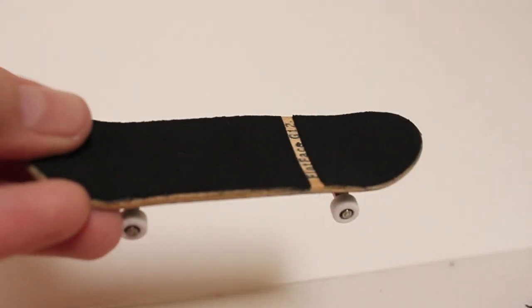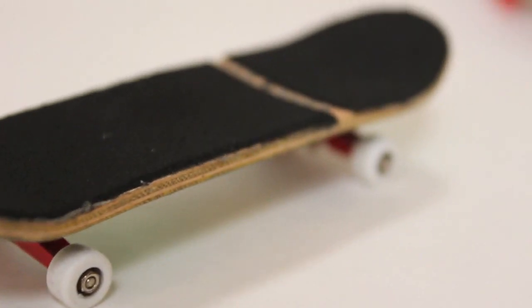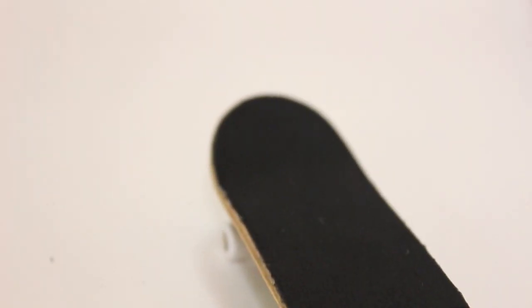Now, move on to the other part of your fingerboard, and you're good to go. You now have a professional-looking piece of grip tape on your board.